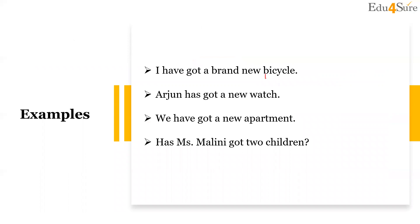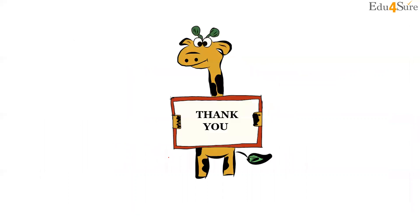I have got a brand new bicycle. Arjun has got a new watch. We have got a new apartment. Has Miss Malini got two children? — here a question is formed. This is how we use 'have got' and 'has got'.